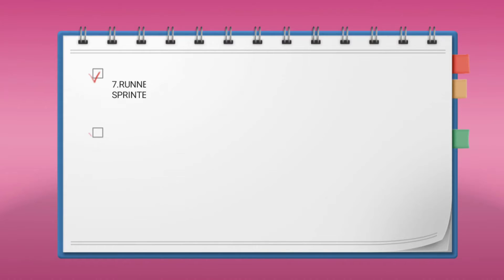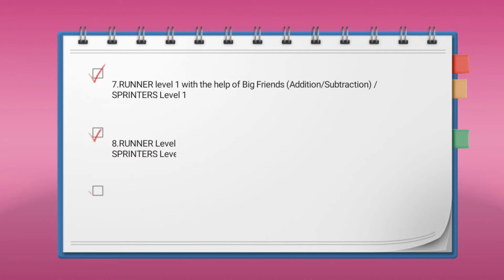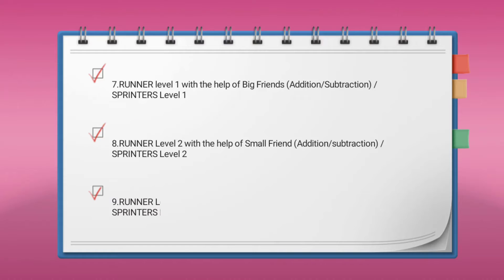In this website we offer some courses like Runner Level 1, with the help of big friends, covering addition, subtraction, and Spinner Level 1. Runner Level 2, with the help of small friends, covers addition, subtraction, and Spinner Level 2.